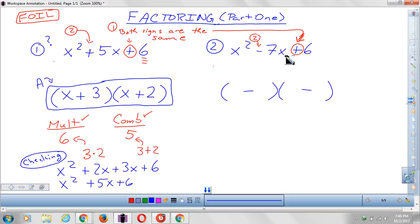Okay, now I need two numbers that multiply to make 6 and that combine to make negative 7. Well, there's an easy answer. Negative 1 times negative 6. And right here I can see that negative 1 minus 6 would make negative 7. So that takes care of the multiplying and the combining.